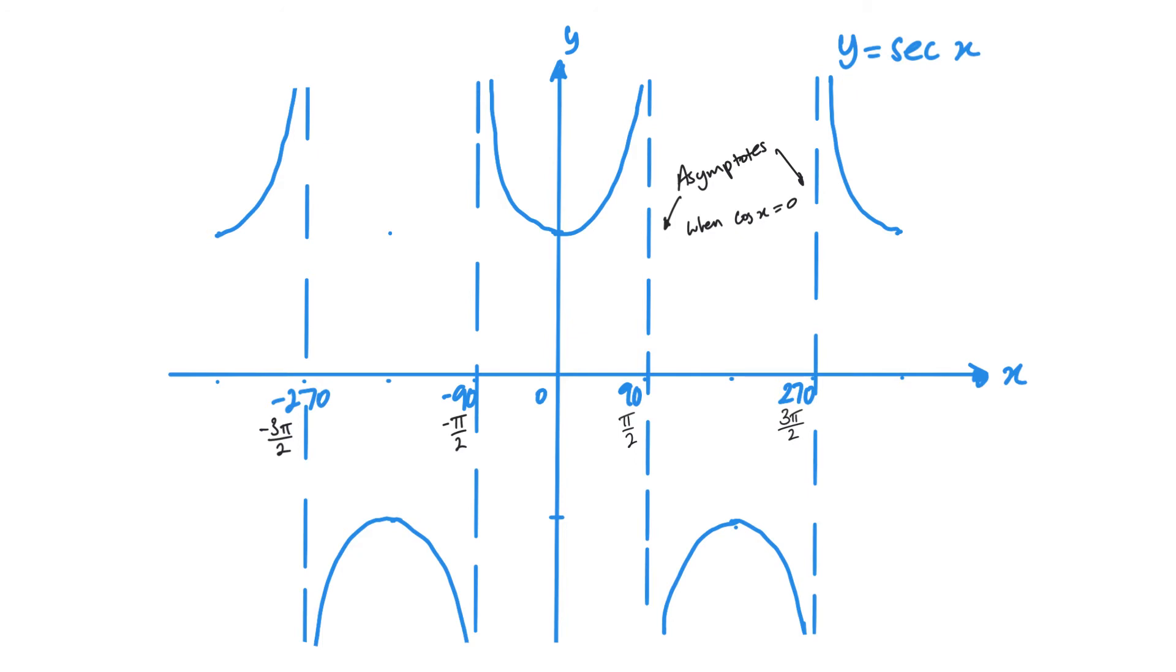Now you can see the Sec X graph is the same as the Cosec graph, just translated. And of course, the asymptotes are everywhere that Cos X was equal to 0. I've also put in black here what it is in radians.